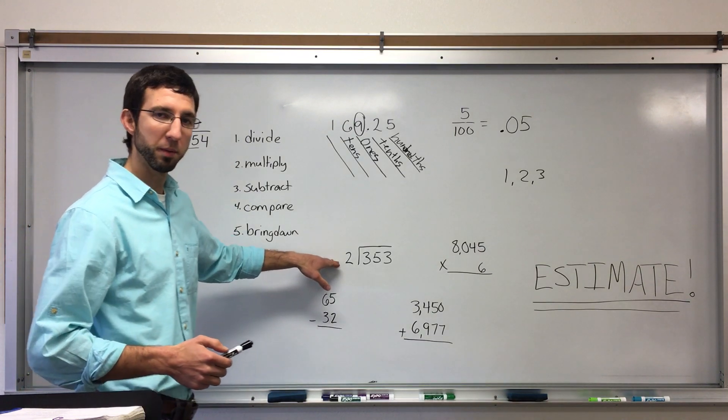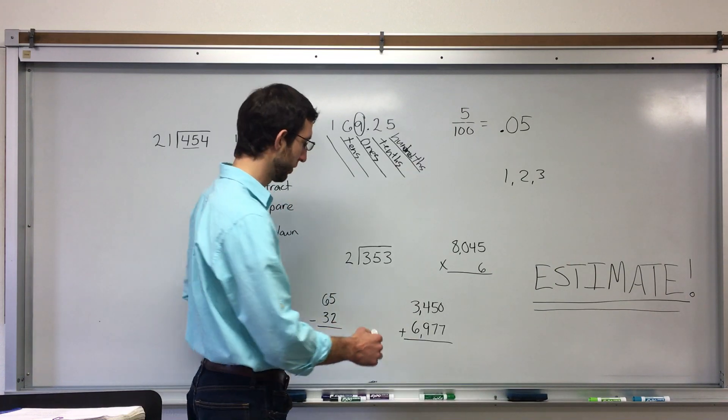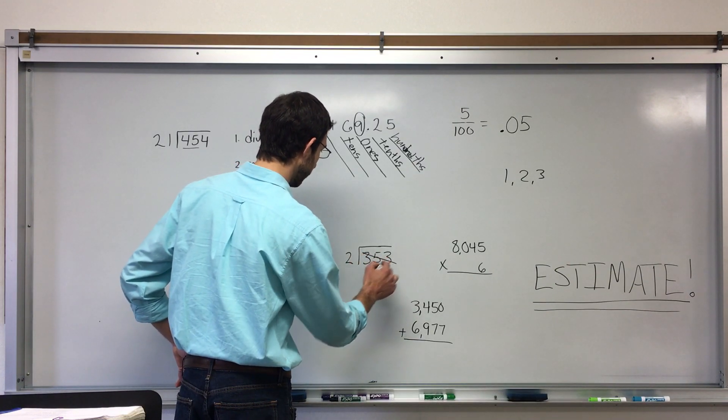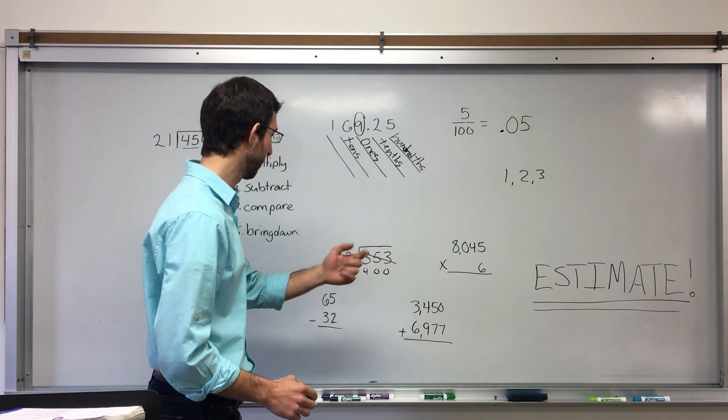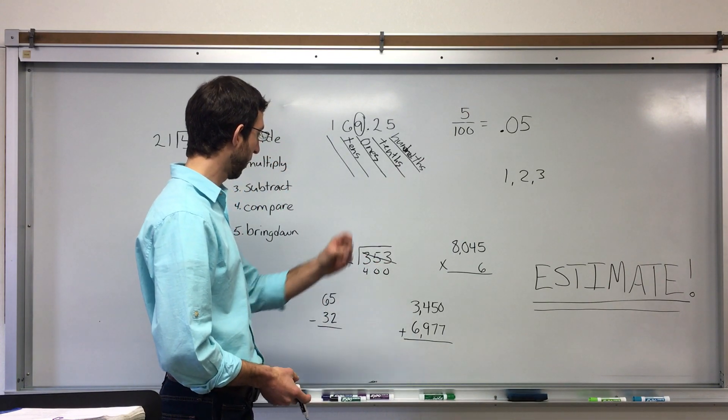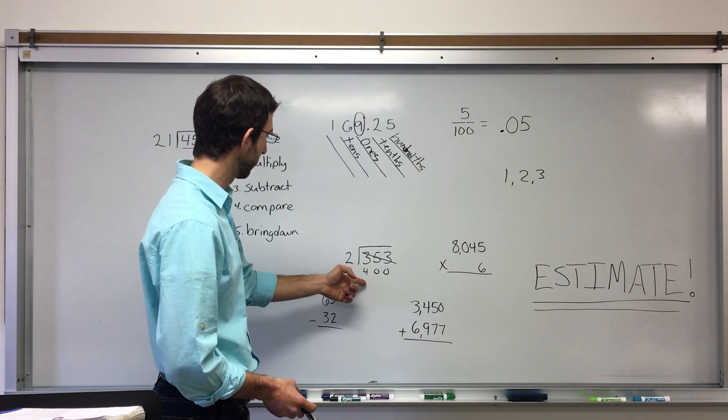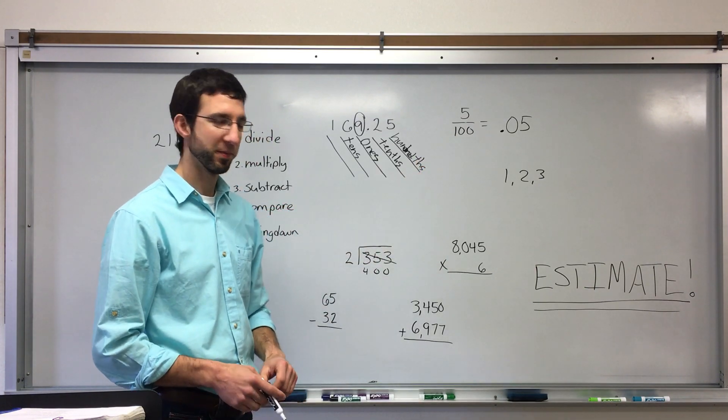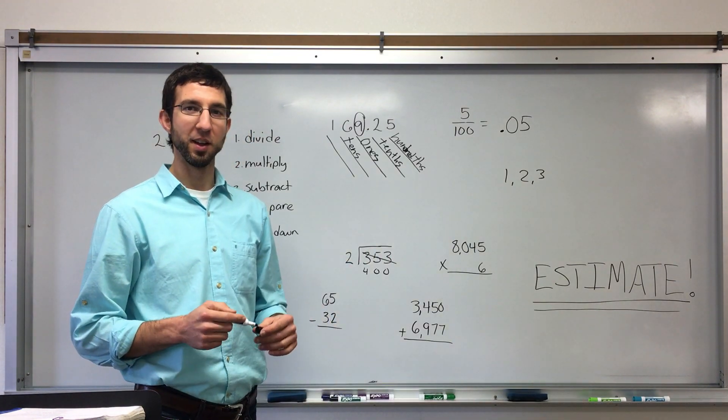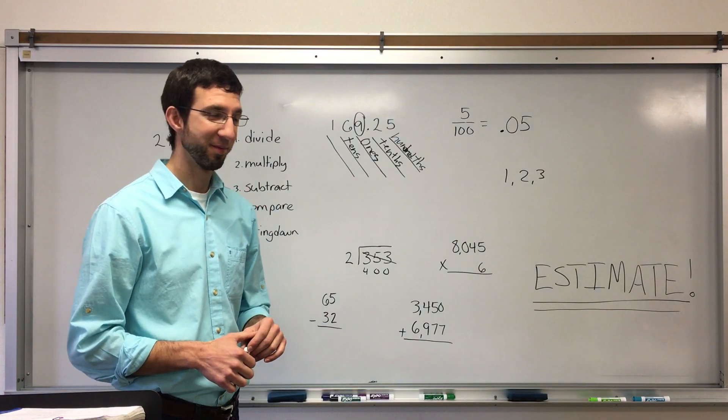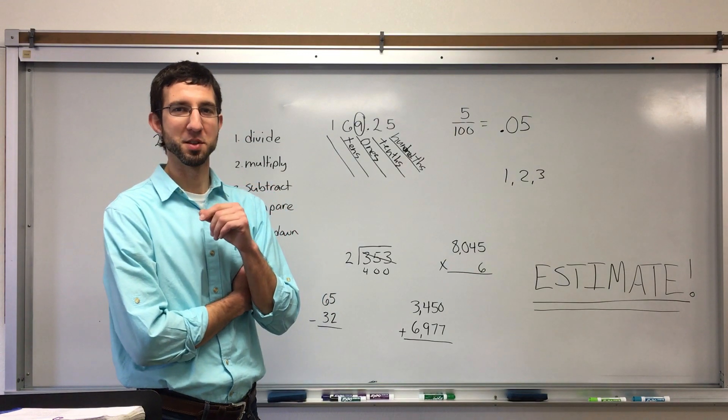When you have a division problem, you round the dividend to the largest place value. So, think about that as 400. And, you can almost get the answer just like that, right? Divide 2 into 4, and then add two zeros. So, estimating is easier. Take advantage of that. Because it's easier, and also you'll get it wrong if you don't estimate.